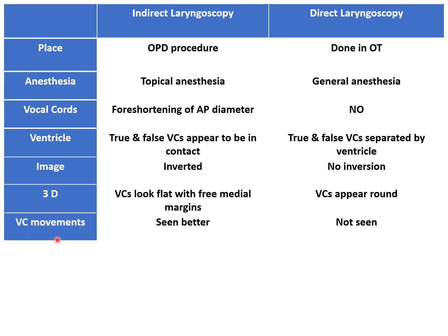The movements of the vocal cords are better appreciated on indirect laryngeal examination. Because direct laryngeal examination is done under general anesthesia and the muscles are paralyzed, vocal cord movements cannot be seen in direct laryngeal examination. So this is an advantage of indirect examination — that is, vocal cord movements are seen.